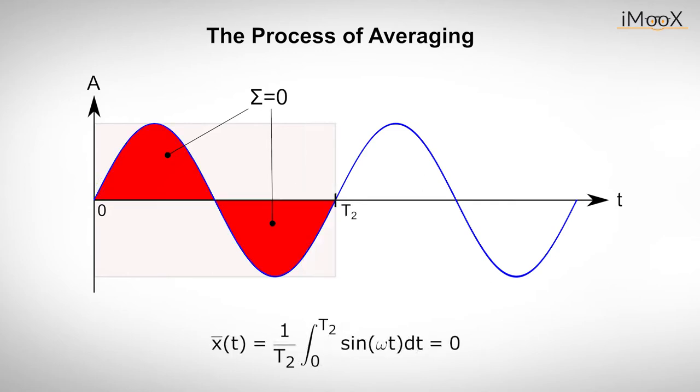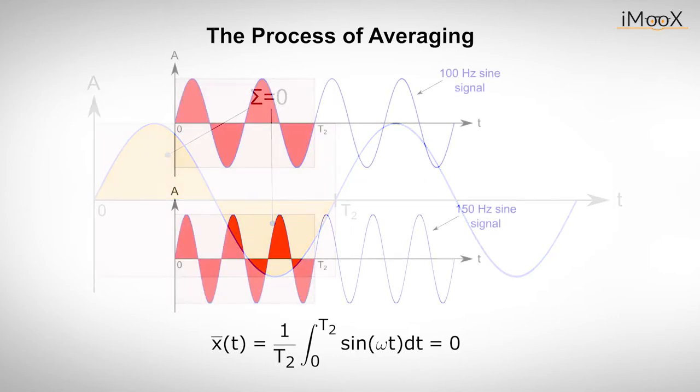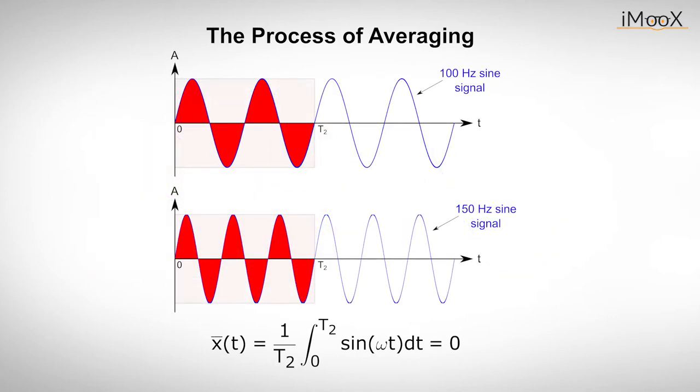Since we can choose our integration interval freely, we can also set it between 0 and T2 for the same input signal. Now we see that for exactly this frequency the areas of the positive and negative oscillation of the sine function cancel each other out. This applies not only to the 50 Hz input signal, but also to the integer multiples of the signal frequency. In this case also 100 Hz, 150 Hz, 200 Hz and so on are cancelled out.